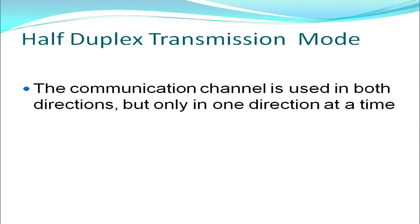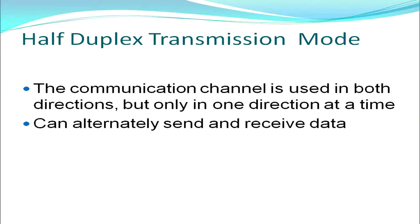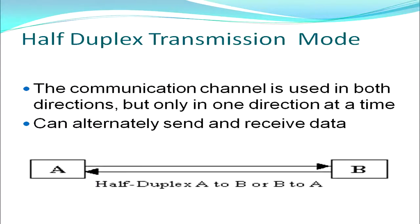We move on to the next transmission mode: half-duplex. It covers up the drawback of simplex mode as the communication channel is used in both directions, but only one direction at a time. If transmission is happening from A to B, it will not happen from B to A during that time. The transmission channel can be used in both directions, but sending and receiving of data is done alternatively.